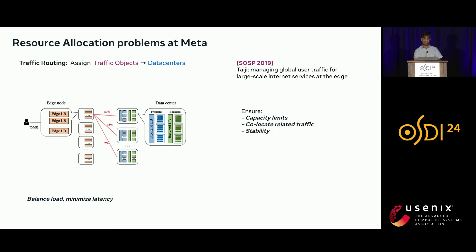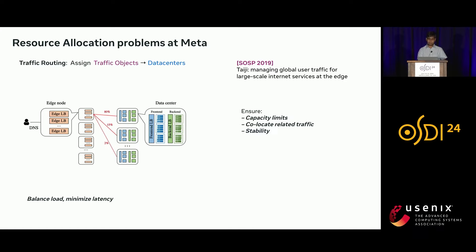Finally, we have the traffic routing problem, where we have a bunch of traffic objects and we want to route them to data centers while making sure we don't exceed the capacity at each individual data center. We want to co-locate related traffic so that cross-data-center traffic is minimized, and ensure the allocation is stable while balancing load and minimizing latency.